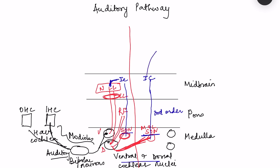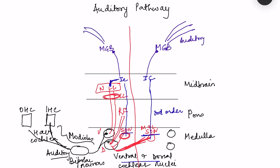From the inferior colliculus, fibers reach the thalamus at the medial geniculate body, where there is again synaptic relay. From the medial geniculate body there are auditory radiations, and from there they reach the auditory cortex, which is present in the superior temporal gyrus.